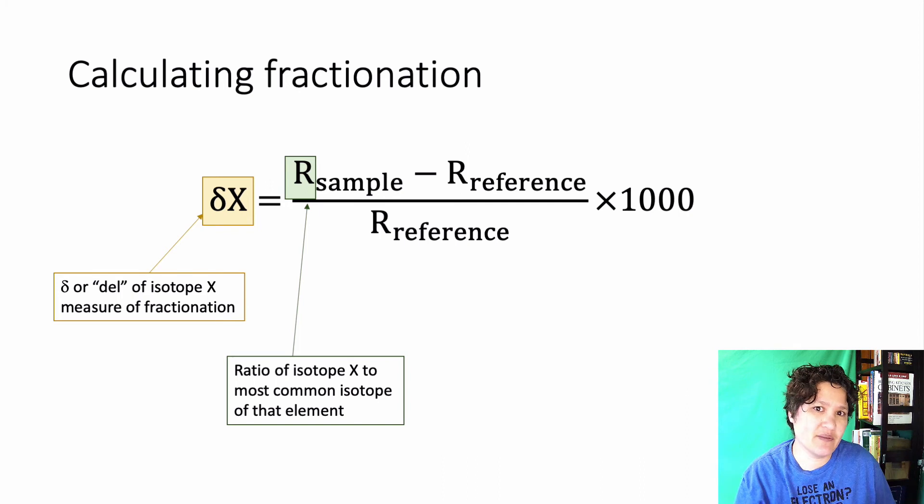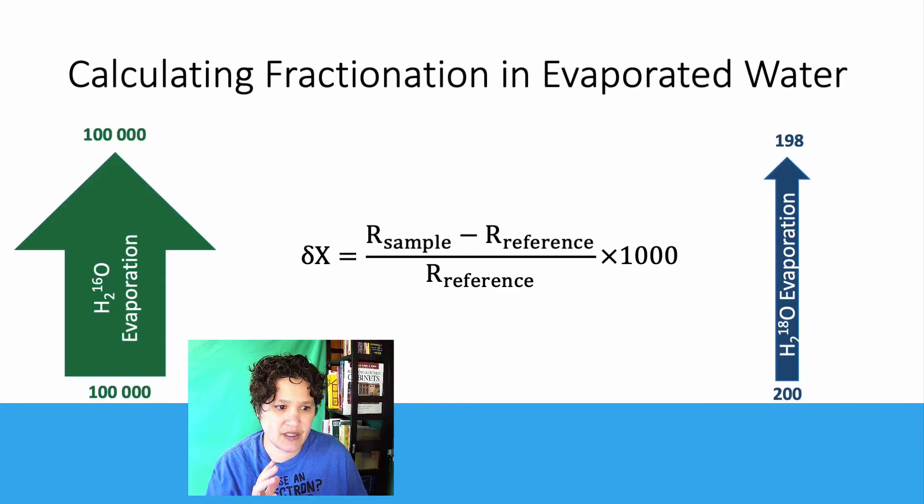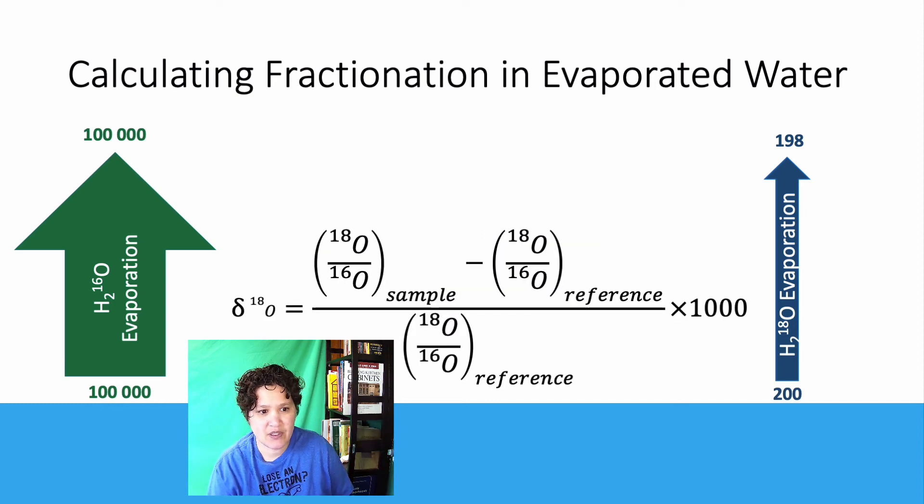So I'm going to show you a very simple calculation, but usually what we plug in for those reference R's is going to come from global standards. So when we talk about water, we'll talk about the SMOW, the standard mean ocean water. And there's a whole bunch of different global standards that you can look up. So let's go back to this example that I gave earlier, where we have evaporation of water with oxygen-16 versus evaporation of water with oxygen-18. And we're going to calculate using the equation that I just gave you. And let's start out by talking about what the ratios are for this particular example.